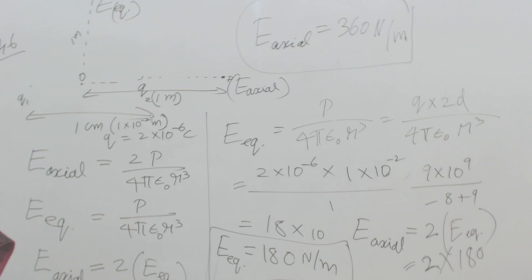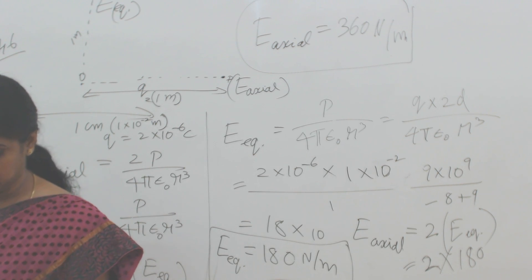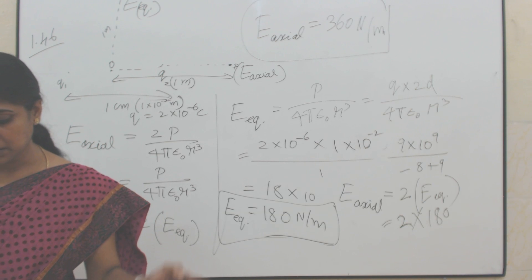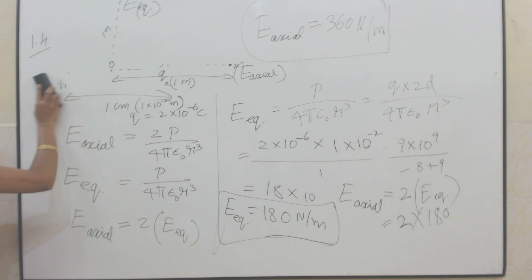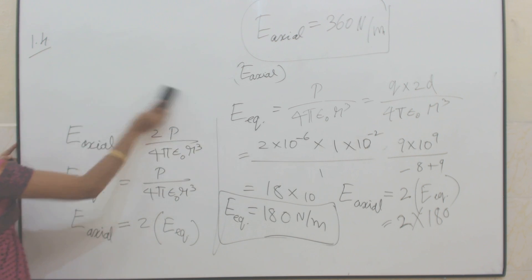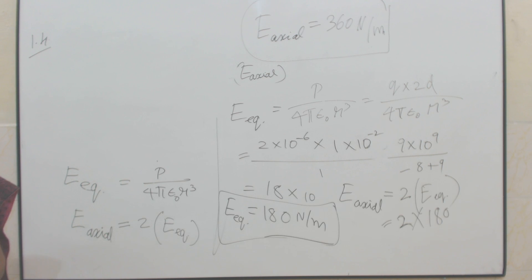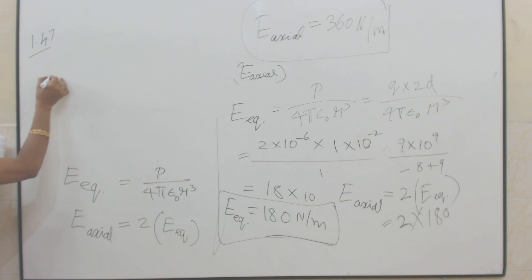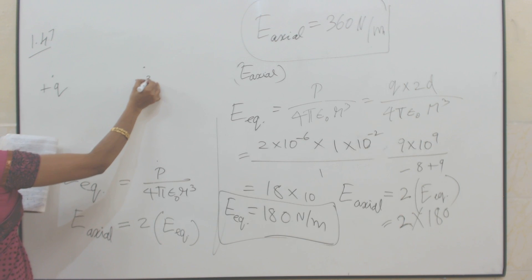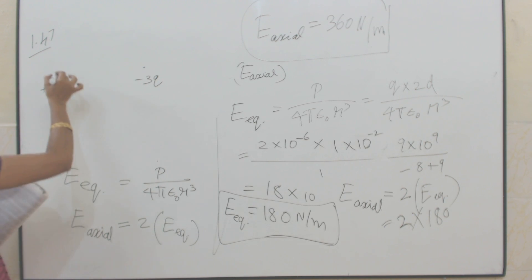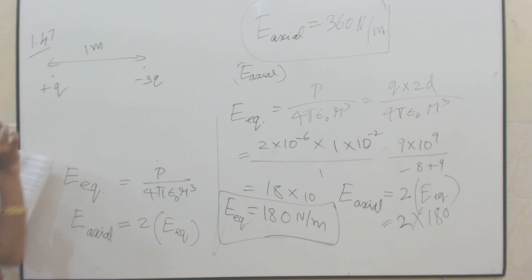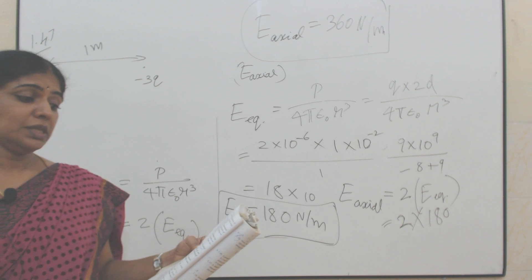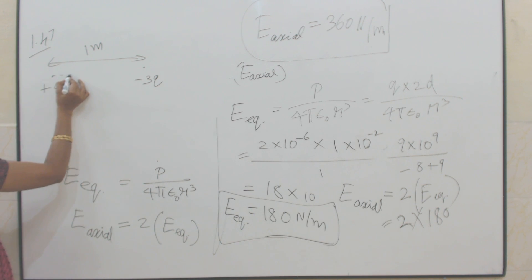Next, problem 1.47: there are 2 charges +q and -3q separated by a distance of 1 meter. At what point between the charges on its axis is the potential equal to zero?